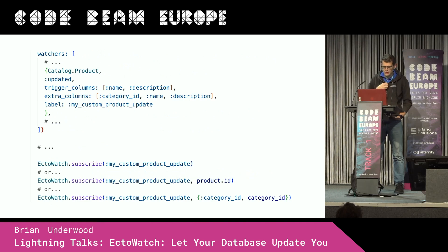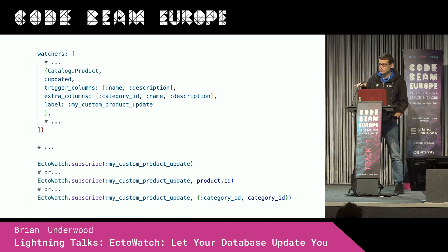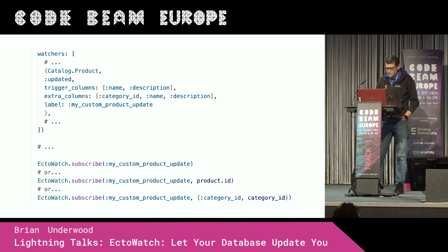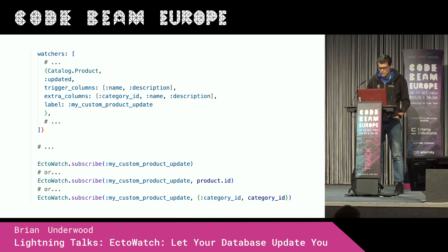But you can get more complicated. You can specify which columns you want to trigger on, and what extra columns you want to send in your messages. Usually you want to stick to association columns because there's a limit in pg_notify of how much data it can send, so just be careful with that. You can subscribe to all updates, to particular IDs, or to association columns — for example, to get all the comments for a blog post, in case you're just showing that in your LiveView.